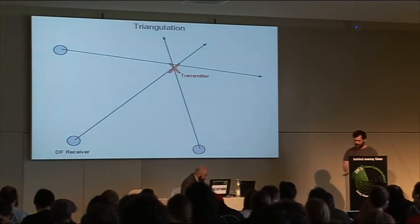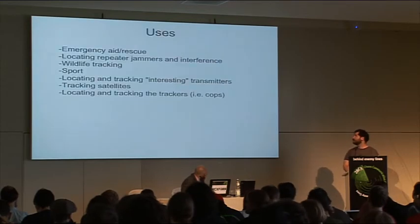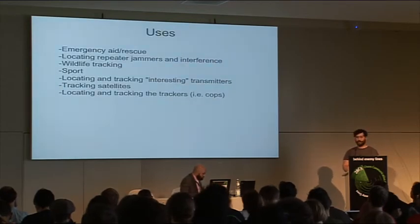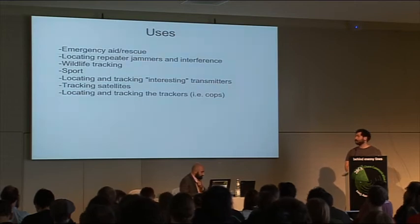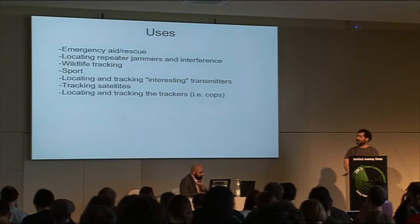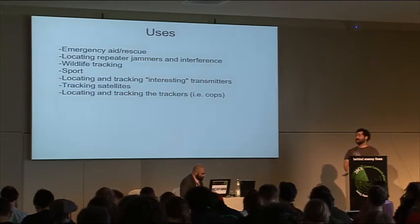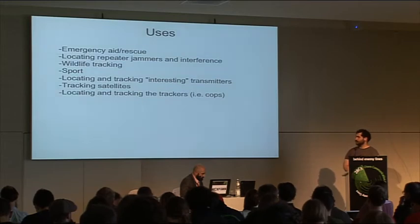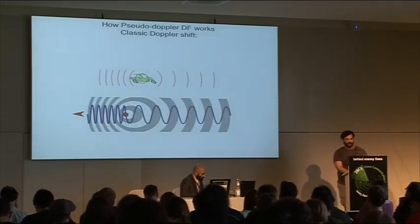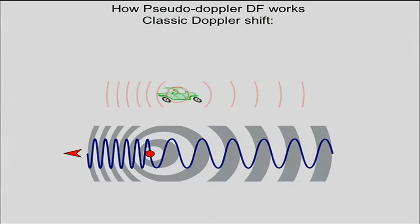There are a number of uses. Some of these are emergency aid and rescue — say someone's lost but they have a radio, you can probably help locate them. Other uses include locating jammers or interference, tracking for sport, tracking wildlife such as endangered species outfitted with transmitters, and finding interesting sources like police or military and tracking them.